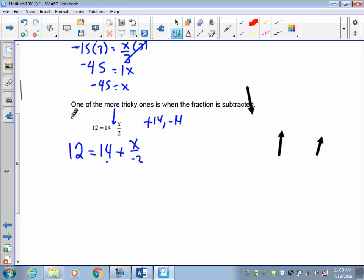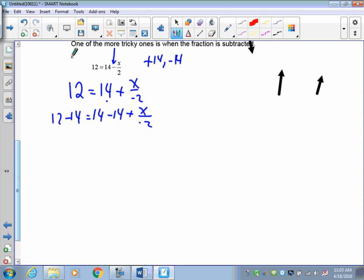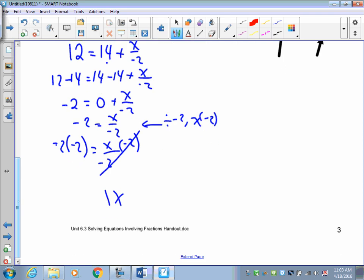Now let's take a look at the 14. I'm adding 14, or I have a positive 14. Negative 14 will get rid of it. So 12 take away 14 is equal to 14 take away 14. I still have my x over negative 2. So now I've got negative 2 is equal to x over negative 2. So here, I'm dividing by negative 2. The opposite is to multiply by negative 2. So negative 2 times negative 2 is equal to x over negative 2 times negative 2. So x is equal to 4. Go over this one again and again and again until you think you've got it straight.